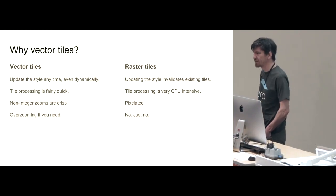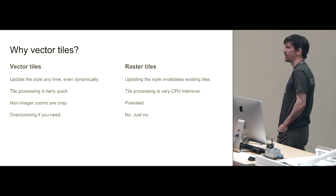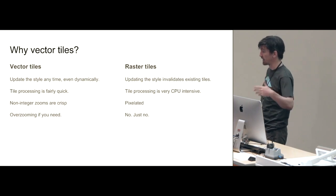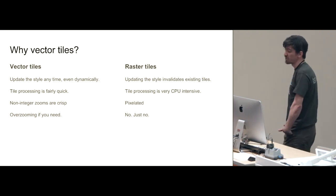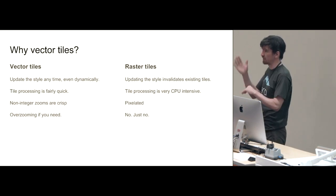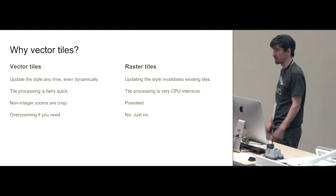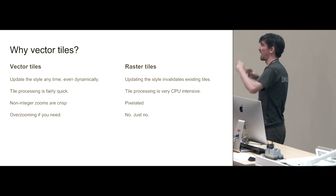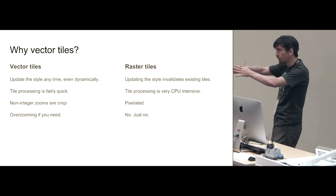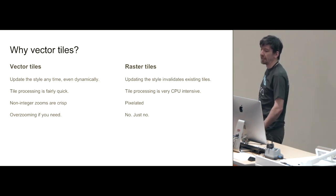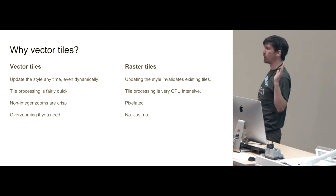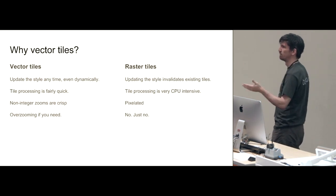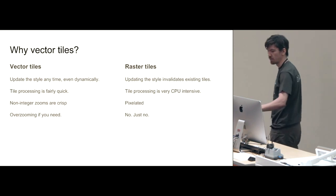Quick summary on why we use vector tiles: you can change the style whenever you want, even in the middle of a user looking at stuff, to do dynamic data visualizations for instance. Tile processing turns out to be a bit quicker if you're just cutting up vectors into little packages — that's faster than generating raster images using something like Mapnik. You also get the benefit of smooth zooming between zoom levels, like 11.1, 11.2, 11.3. And if you only generate vector tiles up to zoom 15, you can still show them at zoom 16, 17, 18, 19, whereas raster tiles would be a pixelated mess by then.